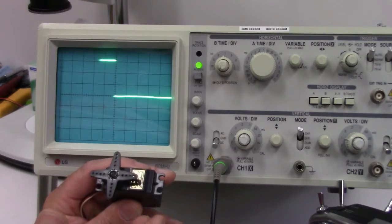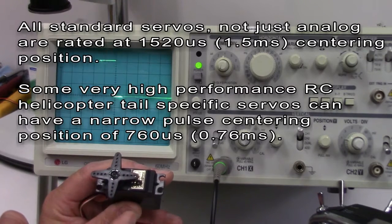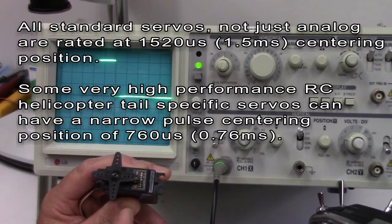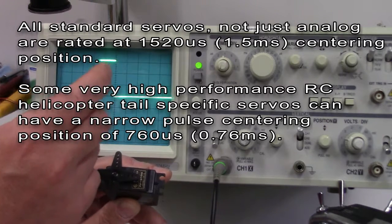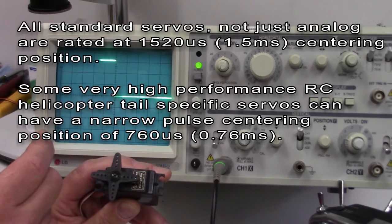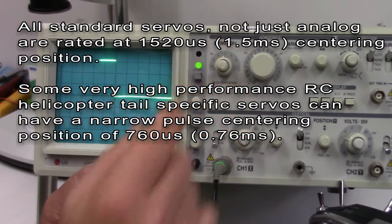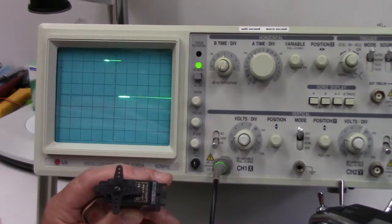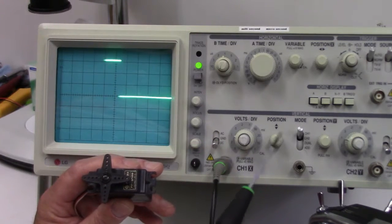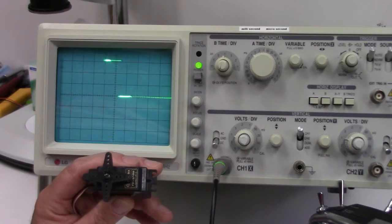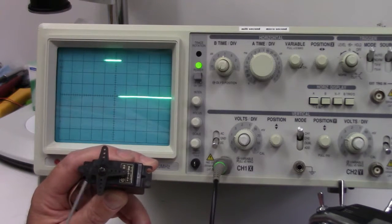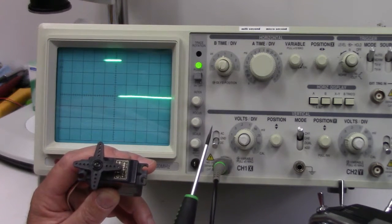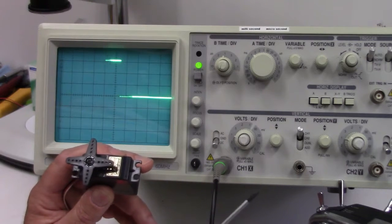I'm just going to reposition that right in the center. Now, you've probably heard that standard analog servos, they're centering, they're often referred to as 1500 microseconds. And that just means they center at 1500 microseconds as far as the width of your PWM signal. And right now we're on a scale of 1 ms per division. So, I'm just going to reposition this to right there. So, 1 ms is the same as 1,000 microseconds.